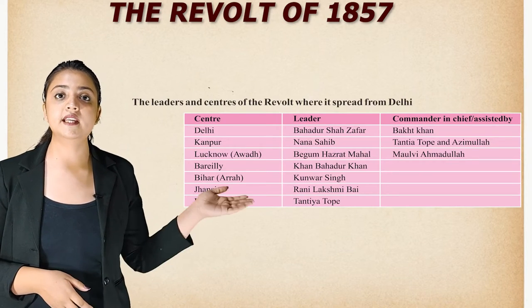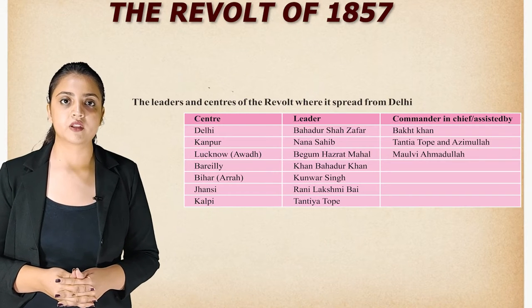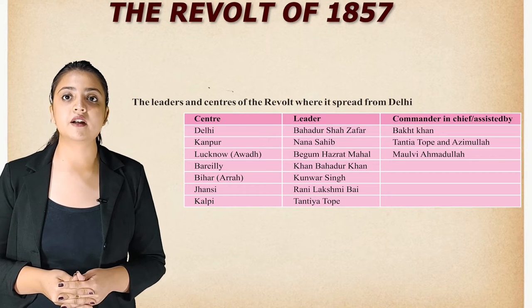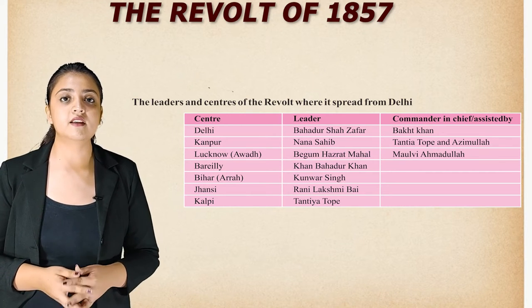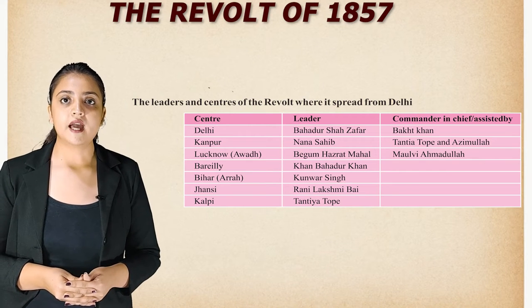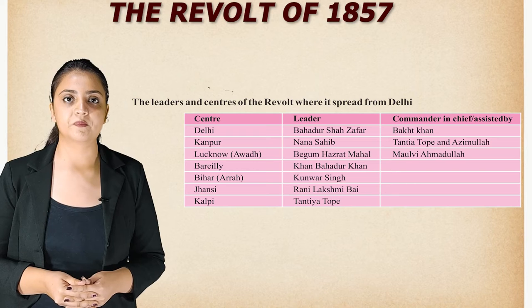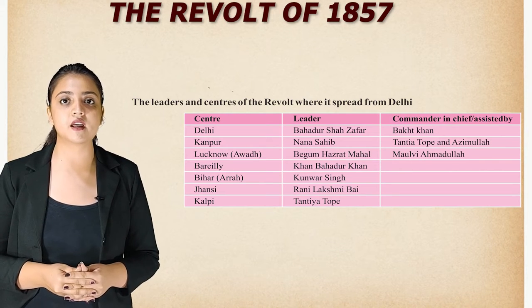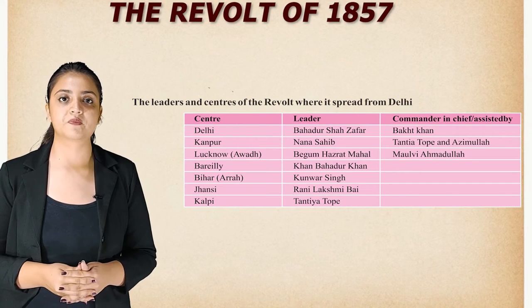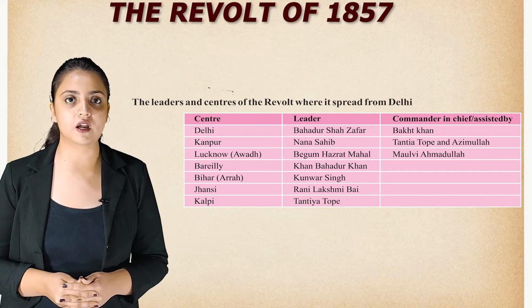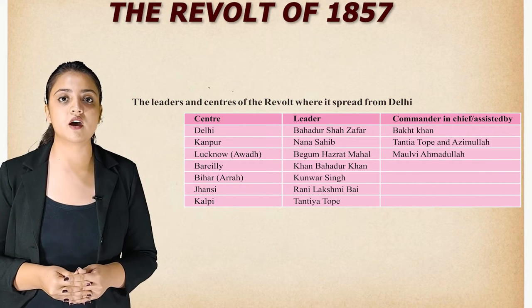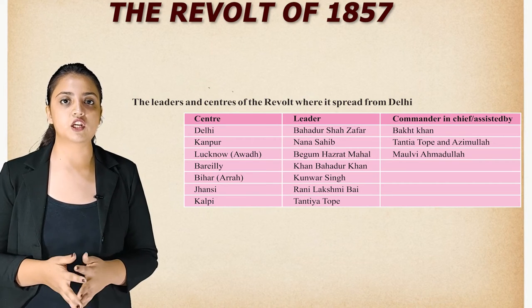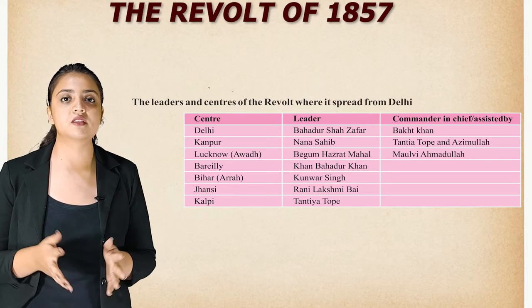The leaders and centres of the revolt: Delhi — Bahadur Shah Zafar, commander-in-chief Bakht Khan; Kanpur — Nana Sahib, commanders Tatya Tope and Azimullah; Lucknow (also known as Awad) — Begum Hazrat Mahal, commander Maulvi Ahmadullah; Bareli — Khan Bahadur Khan; Bihar (Ara) — Kunwar Singh; Jhansi — Rani Lakshmibai; Kalpi — Tatya Tope.